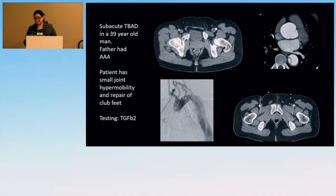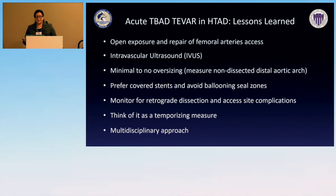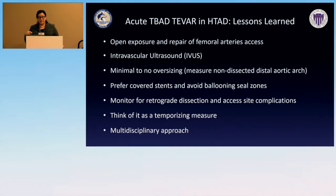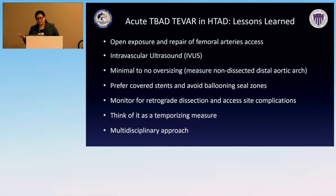His testing showed a TGF-β2 receptor mutation. Key technical lessons: open exposure and repair of femoral arteries — percutaneous closure with sutures doesn't hold well in connective tissue disorders. Use intravascular ultrasound routinely. Minimize or avoid oversizing, and measure with ultrasound in the arch proximal to the landing zone. Prefer covered stents over bare metal wires. Monitor for retrograde dissection. Think of TEVAR as a temporizing measure and quickly plan what to do for the rest of the aorta. Multidisciplinary approach is essential.